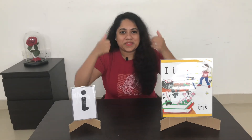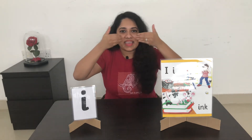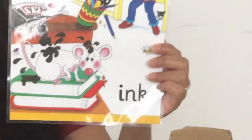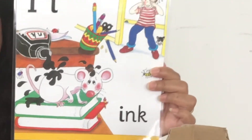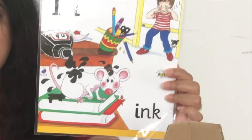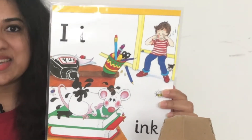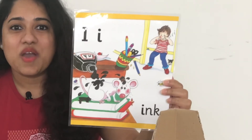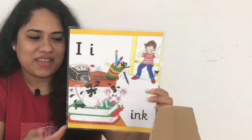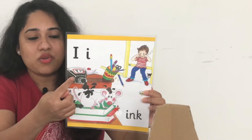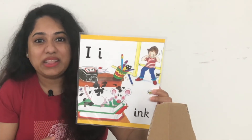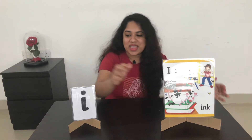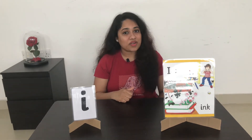Can you do that with me? I, I, I. Look at this — what animal is this? You're right, this is a mouse, and this mouse has a name. Do you know what his name is? It's Inky! I for Inky. Look what he has done — oh, the silly mouse! He has knocked over the ink bottle and he has spilled the ink everywhere.